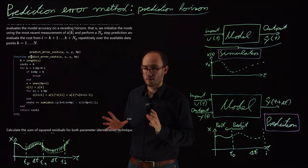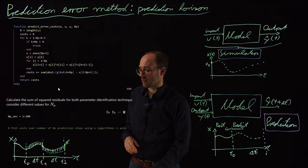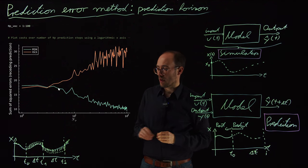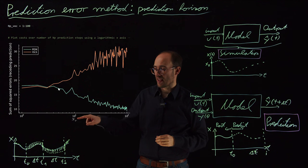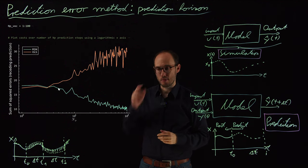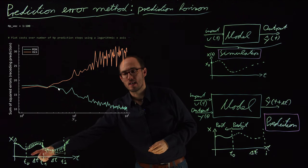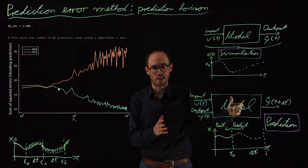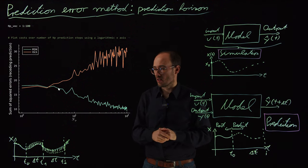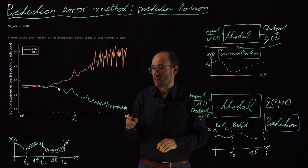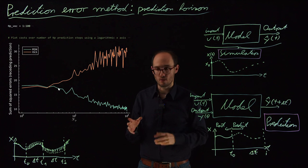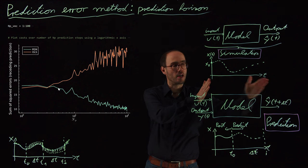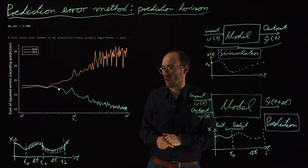In the prediction case, we basically have intermittent base points which we can reinitialize to, which we cannot do in the simulation case. The interesting case is this figure here. What we have basically here is on the x-axis np in a logarithmic scale, and np in the discrete time case is how many prediction steps should I predict into the future before I can reinitialize my model based on past knowledge. So basically np being a very large value, 10 to the power of 2, 100 prediction steps, that would be more or less already the simulation case.